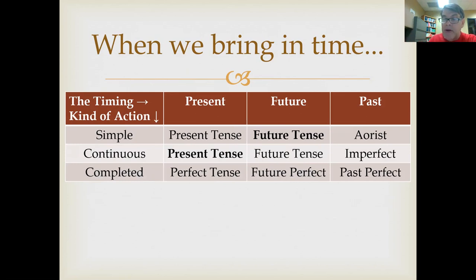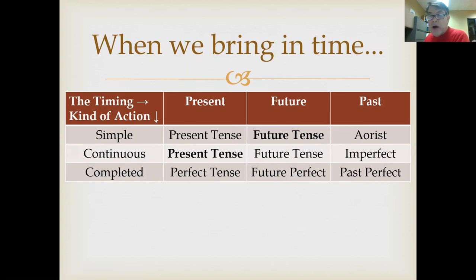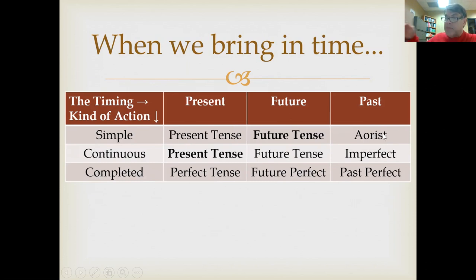You can say 'Jesus wept' in an undefined way, or you could say 'Jesus was weeping for two hours' — that continuous way of talking about the past uses the imperfect tense. The difference between the aorist and the imperfect in Greek: the aorist is the simple past — it happened — and the imperfect is it was happening, more continuous flavor.